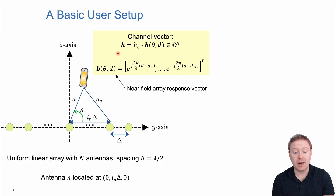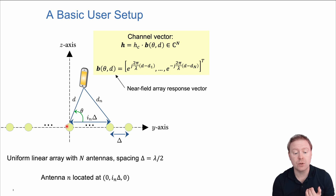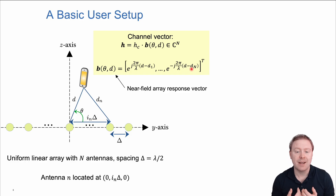We can write this channel vector—an N-dimensional vector because we have N antennas—as some common factor times a so-called near-field array response vector that depends on the angle and the distance. This near-field array response vector describes the phase shift that different antennas have compared to the phase shift at the origin. Essentially, we take the distance differences between a particular antenna and the origin, subtract them, multiply by 2π over lambda, and obtain the different phase shifts. This is a general representation for near-field line-of-sight scenarios.